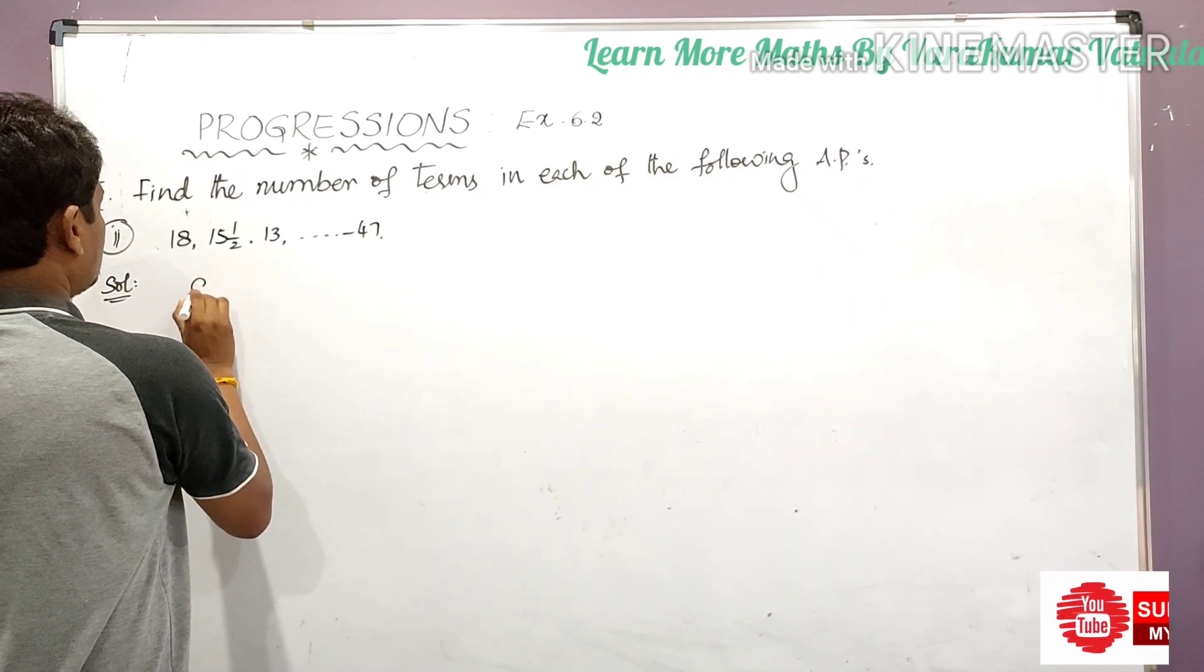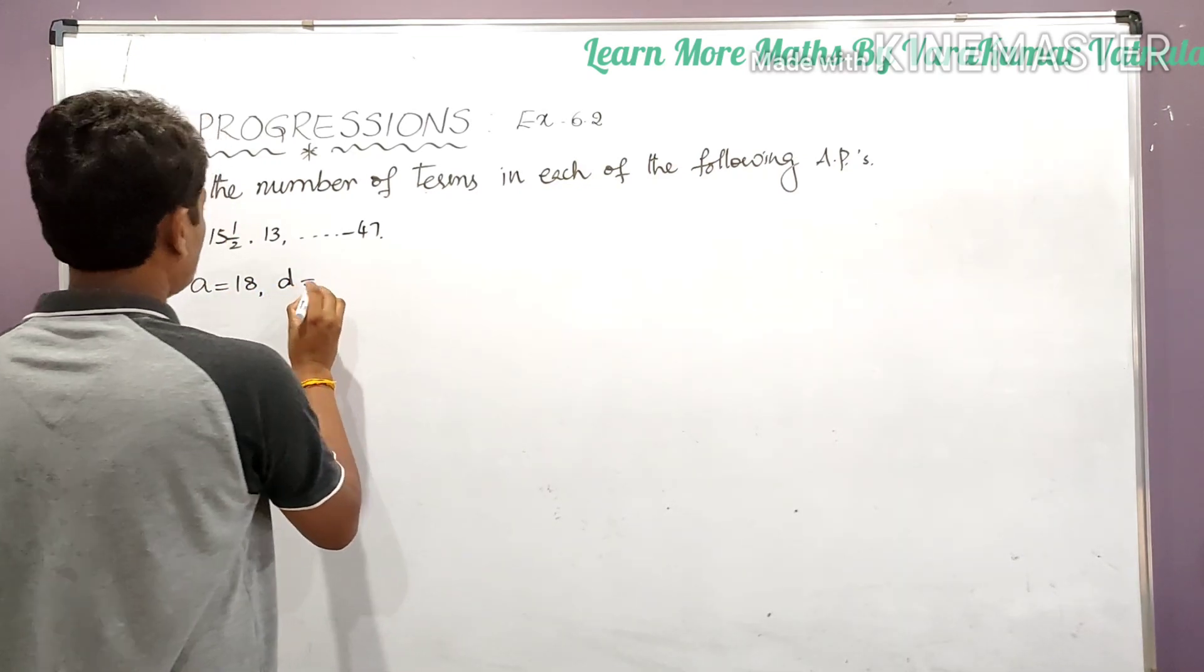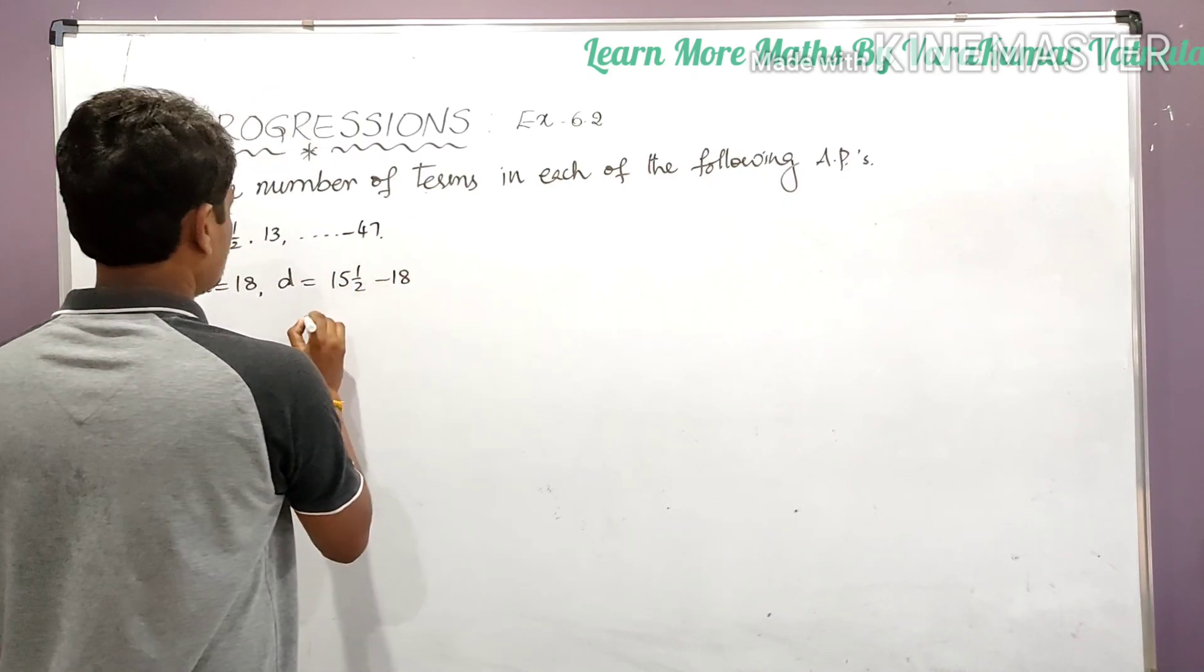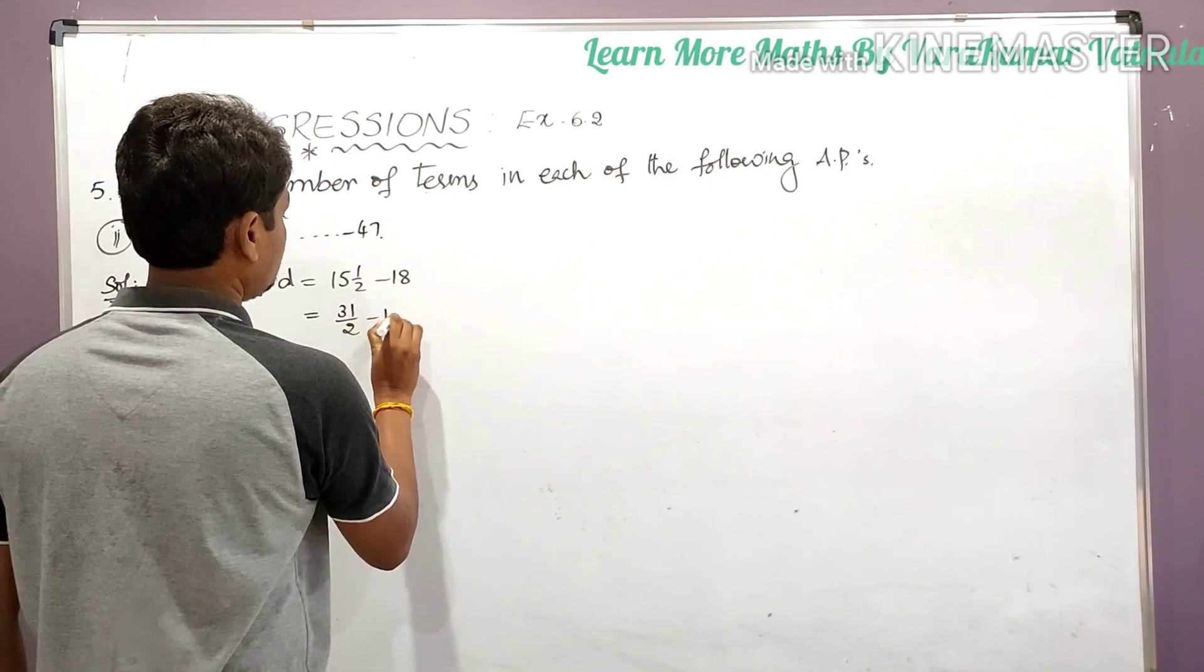So here a is equal to 18 and d is equal to, d is equal to 15.5 minus 18. So it will be 31/2 minus 18.